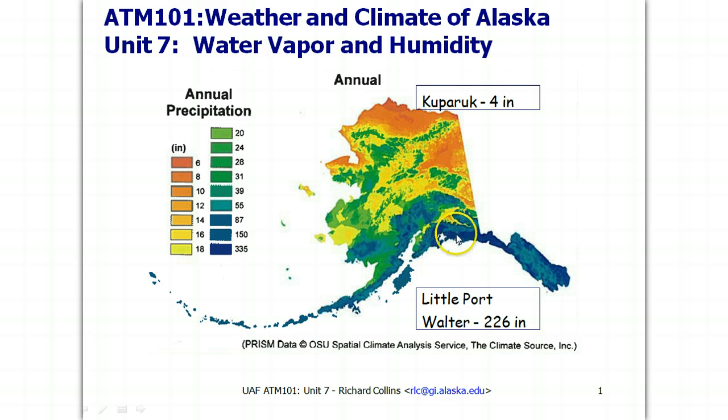The map shows the huge variation in precipitation across the state. Here in the Southeast Panhandle, we're getting up to 335 inches of rain a year. At Little Port Walter, recorded one of the highest levels at 226 inches. And as we move northward across the state, a general decrease as we head towards the Arctic with values at Kuparek of just 4 inches.